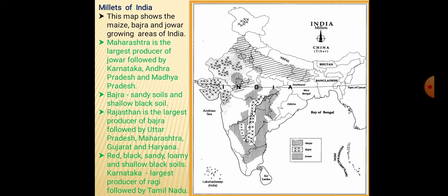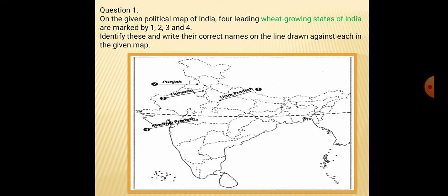We will see through questions. On the given political map of India, four leading wheat growing states are marked by 1, 2, 3 and 4. Identify these and write their correct names. First is Uttar Pradesh, second is Punjab, third is Haryana, fourth is Madhya Pradesh.